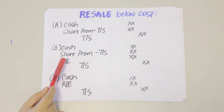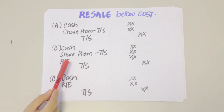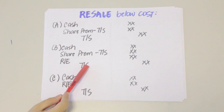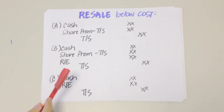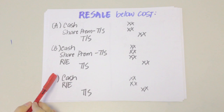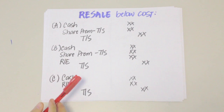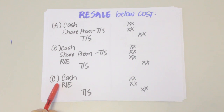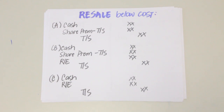If there is no existing Share Premium – Treasury Shares balance, you debit Cash and debit directly to Retained Earnings for the loss, then credit Treasury Shares. That's all for today — thank you and I hope you learned a lot.